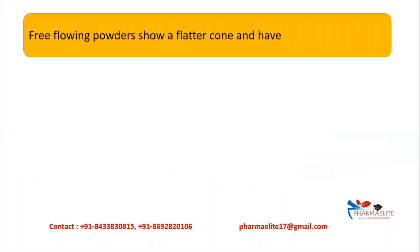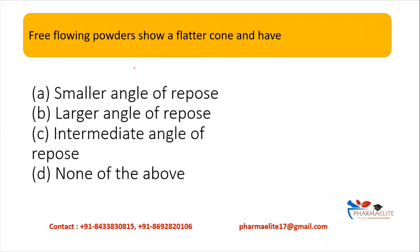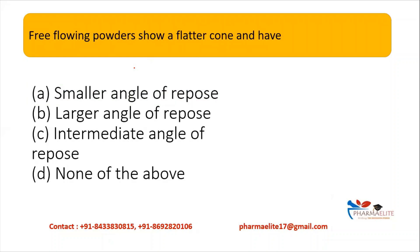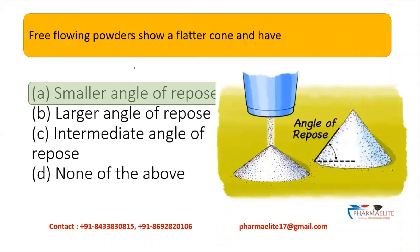Here is a question from this topic: 'Freely flowing powders show a flatter cone and have — (A) smaller angle of repose, (B) larger angle of repose, (C) intermediate angle of repose, (D) none of the above.' The answer is option A — smaller angle of repose. Because the powder is freely flowing and shows a flatter cone, the height will be less, and therefore the angle of repose will be smaller.